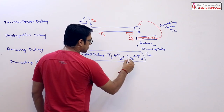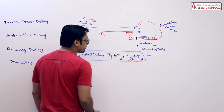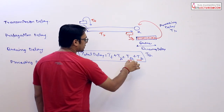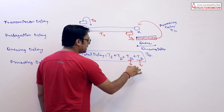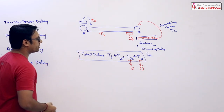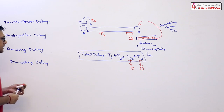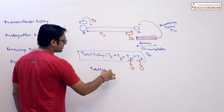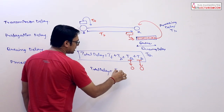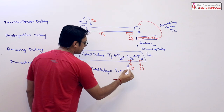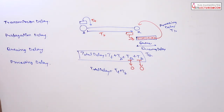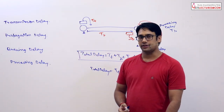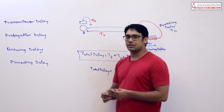If queuing delay and processing delay are given in a question, you include them. If they are not given, you assume they are equal to zero. In that case, the total delay to send one data packet from sender to receiver equals transmission time plus propagation time. We'll move forward in the next video.